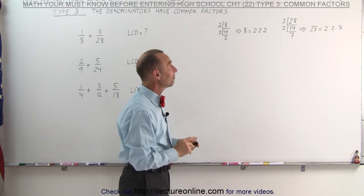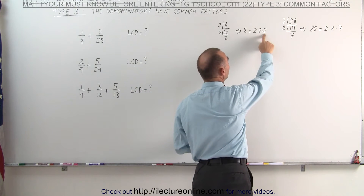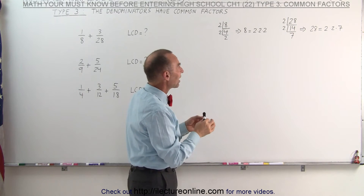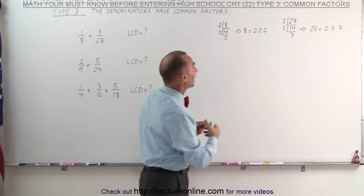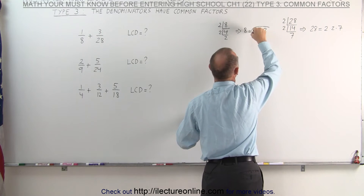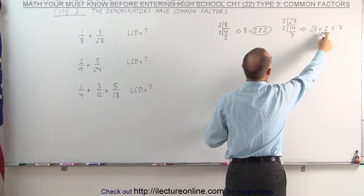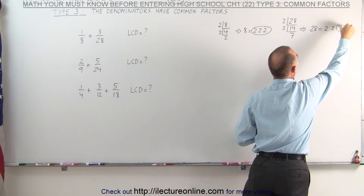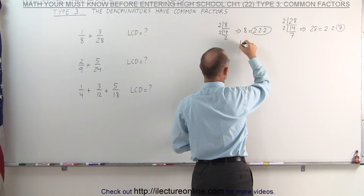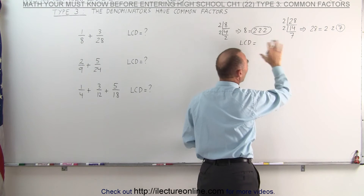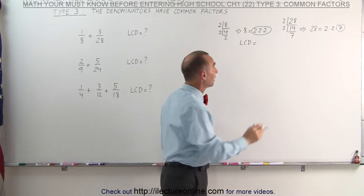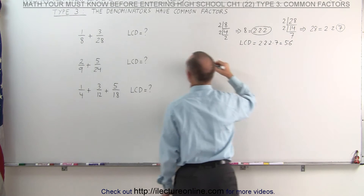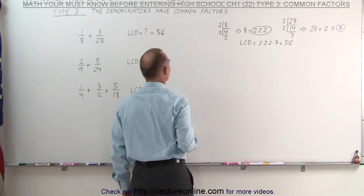We're going to find all the prime factors. We have 3 twos here, we have 2 twos there, and we have 1 seven there. We will circle each prime factor where it occurs the most. In this case, we have 3 of them, so we're going to circle these. We don't have to circle these 2 because there's only 2 of them there and there were 3 of them here. But we have 1 seven there, so we have to circle that 1. The lowest common denominator is simply the product of all the prime factors we've circled — 2 times 2 times 2 times 7, which is 56.